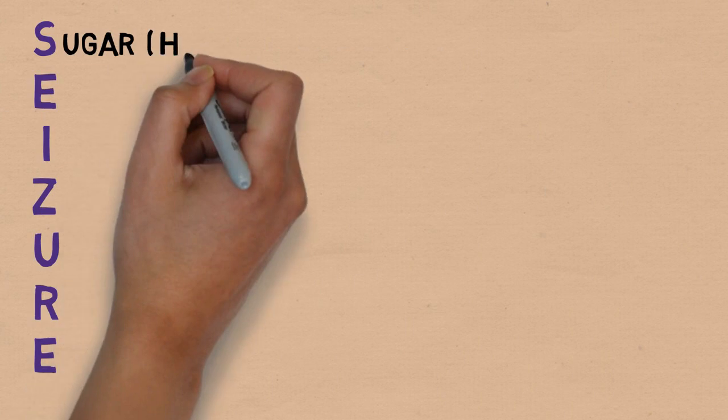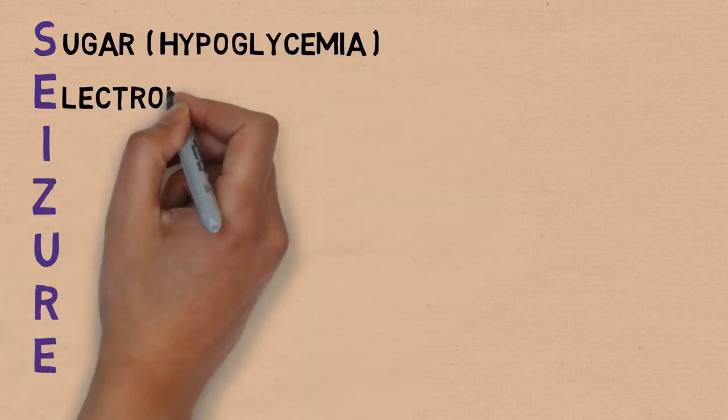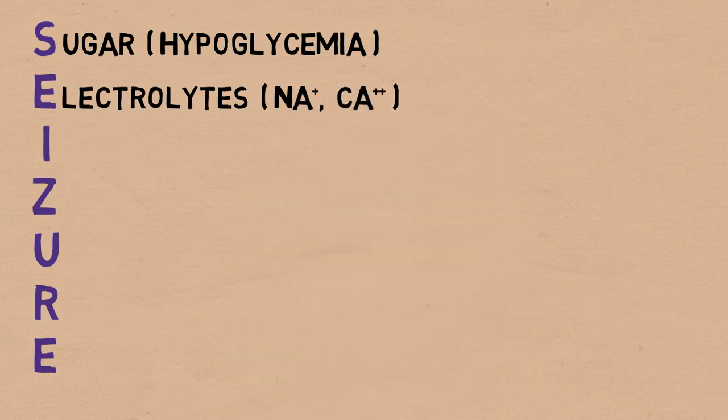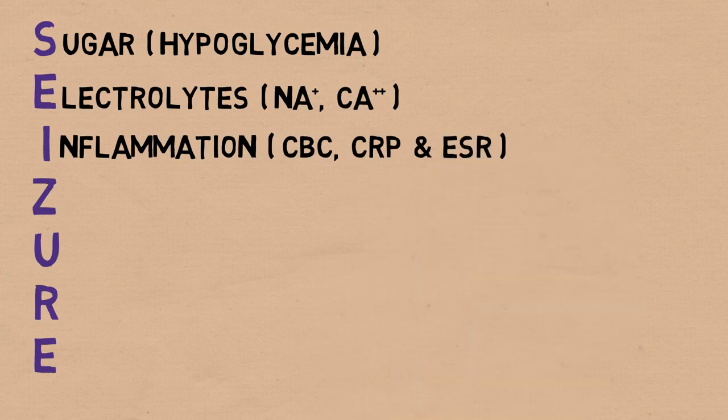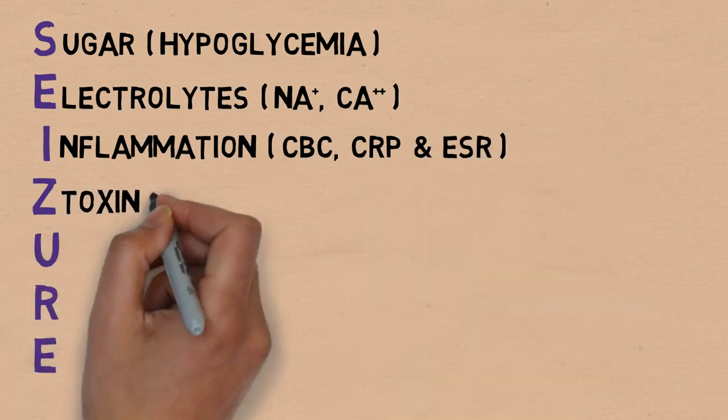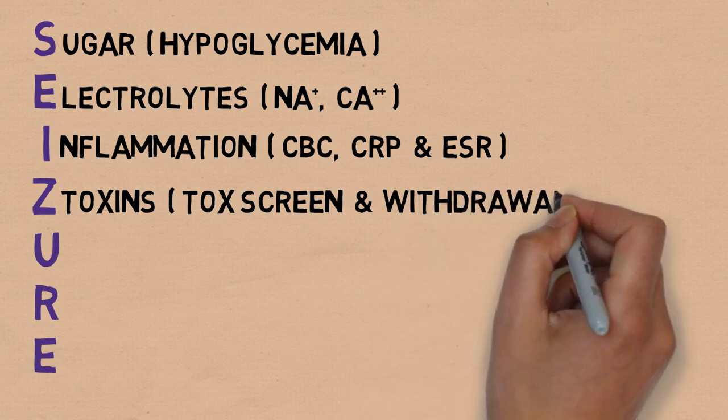S is for sugar, especially hypoglycemia. E is for electrolytes, especially sodium and calcium. I is for inflammation, so CBC, CRP, and ESR. Z is for toxins, so order toxscreen and consider drug and alcohol withdrawals.